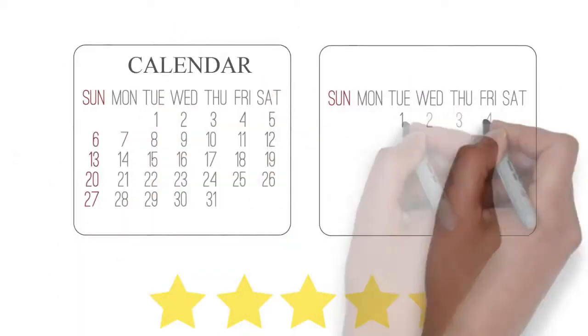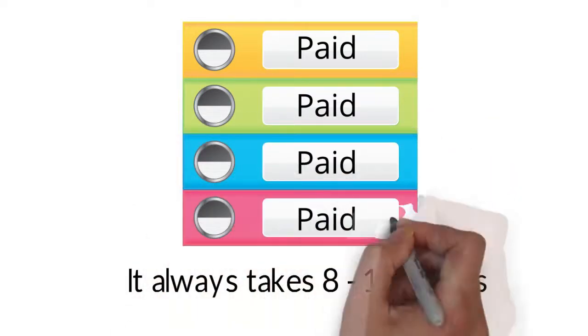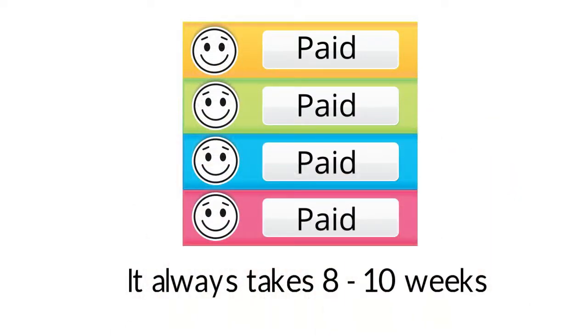I'm sure you can see the pattern. It always takes 8 to 10 weeks, but it always results in greatly reduced debtor ledgers. And these results aren't exceptional. They're normal.